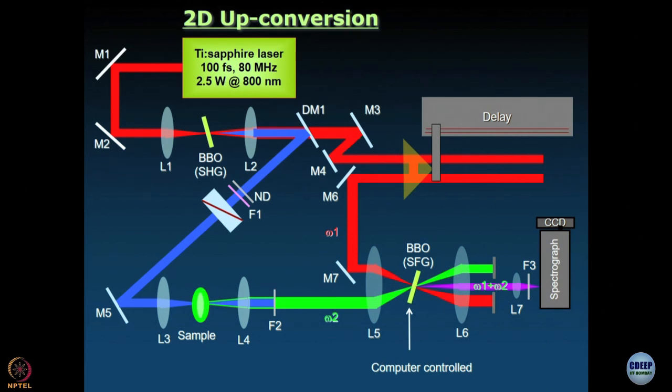Let us move on and talk about 2D upconversion. In the experiments we have discussed so far, if you want to know how the fluorescence spectrum evolves with time, you have to go emission wavelength by emission wavelength, record a decay, stop, change the angle of the SFG crystal, and start again. This can be made simpler with 2D upconversion, which comes in two forms. We will discuss the simpler form now and the more interesting form later, once we have sufficient background in nonlinear optics.